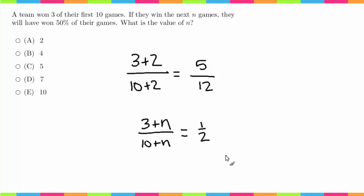one of these answers. This algebraic method may be faster. To solve this, I would cross multiply. I'm going to get 2 times (3 + n) equals 1 times (10 + n).